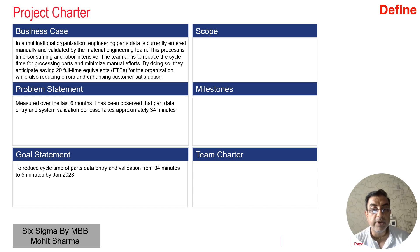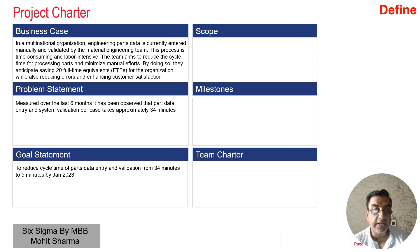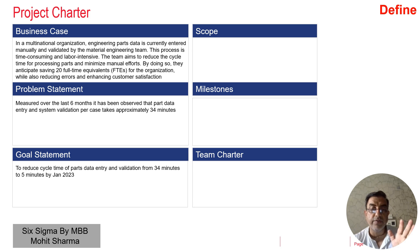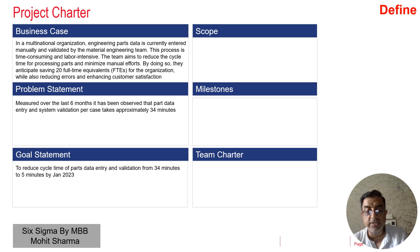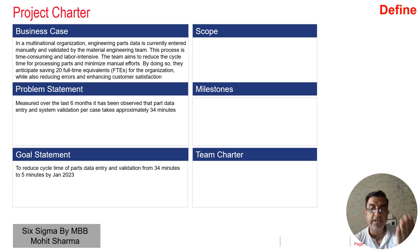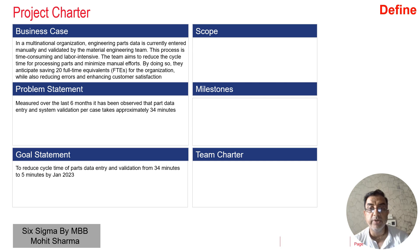For example, saying you want to reduce your weight is a goal, but it is not a SMART goal. However, if you say that you want to reduce your weight from 80 kg to 70 kg in the next six months, then it becomes a SMART goal — it already has a baseline, it has a target, and that is how you define a SMART goal statement.